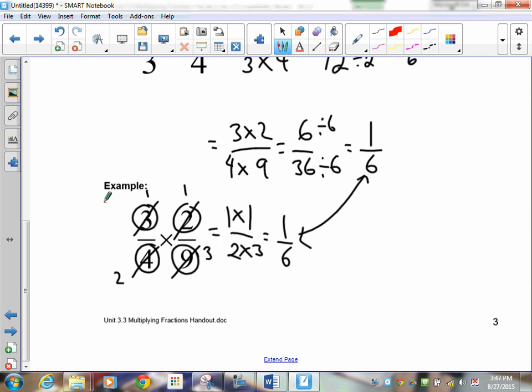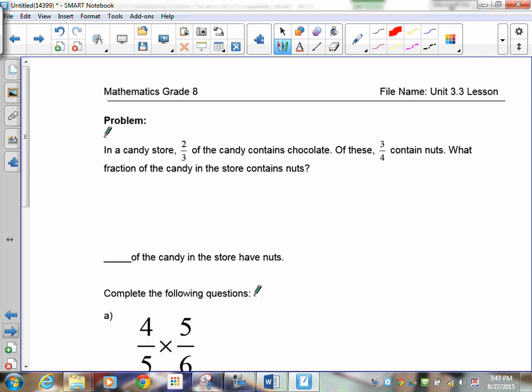Your choice. You don't have to do it the second way. You can do it the first way if you're happy. In a candy store, 2 thirds of the candy contain chocolate. Of these, 3 quarters contain nuts. What fraction of the candy in the store contains nuts? So, solve this problem. I'll give you a hint. It's multiply. Setting it up. 2 thirds times 3 quarters. 2 times 3 over 3 times 4. 2 times 3 being 6. 3 times 4 being 12. These are both divisible by 6. 6 divided by 6 is 1. 12 divided by 6 is 2. So, one half of the candy in the store has nuts.